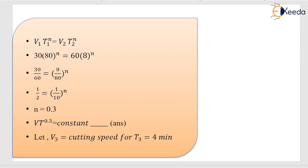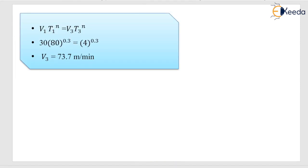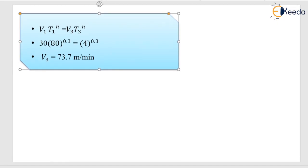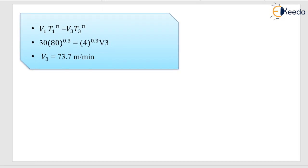Now for the cutting velocity at a tool life of 4 minutes, we use v1·T1^n = v3·T3^n, where v3 is unknown, T3 = 4 min, n = 0.3, and v1, T1 are known. Solving gives v3 = 73.7 meters per minute. These are simple numericals on metal cutting — practice more for better understanding.